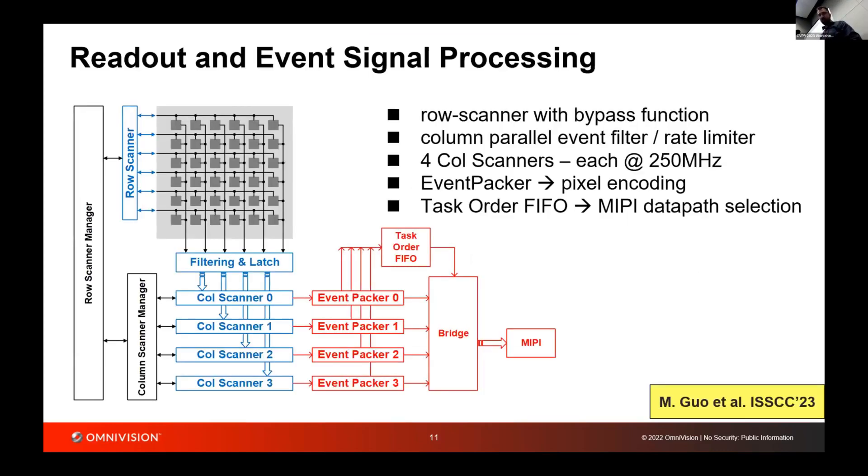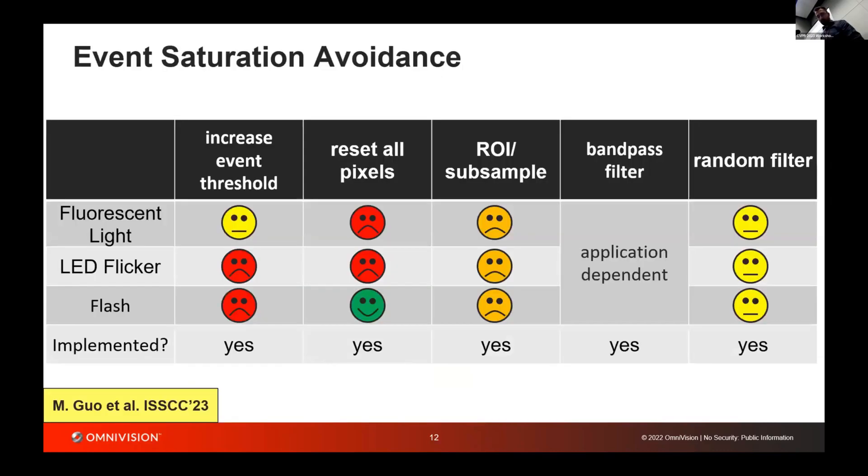This is a high-level view on the sensor. Again, there is much more detail in the ISCC paper and upcoming JSCC paper. We have the pixel array here in gray. We have readout scanner at the left and at the bottom. We have a scanning circuit. It is not arbitration, but we do implement the scanner such that if the row does not have a read request, we skip over the row in a fraction of a clock cycle. We don't spend clock cycles on rows or columns that don't have events. So we still read out sparse. This is pretty much the high-level view on the sensor.